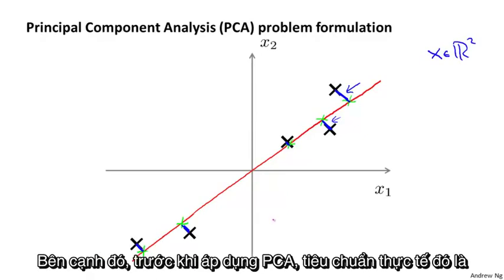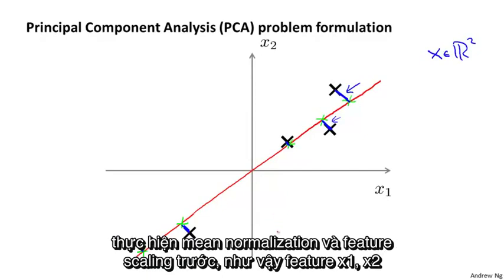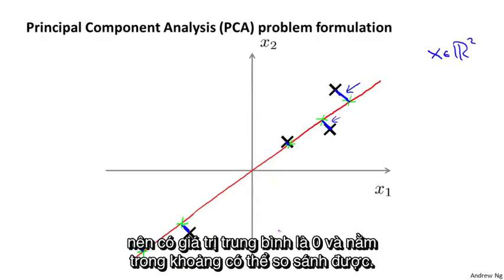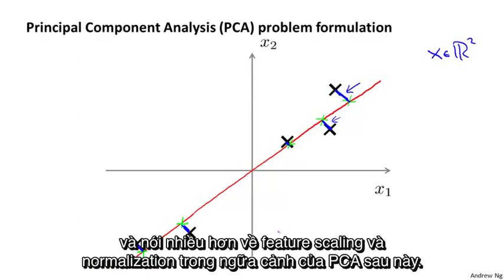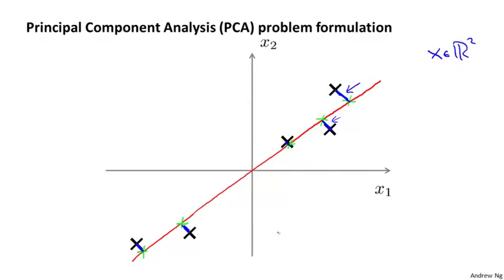As an aside, before applying PCA, it's standard practice to first perform mean normalization and feature scaling, so that the features x1 and x2 have zero mean and comparable ranges of values. I've already done this for this example, but I'll come back to this later and talk more about feature scaling and mean normalization in the context of PCA.